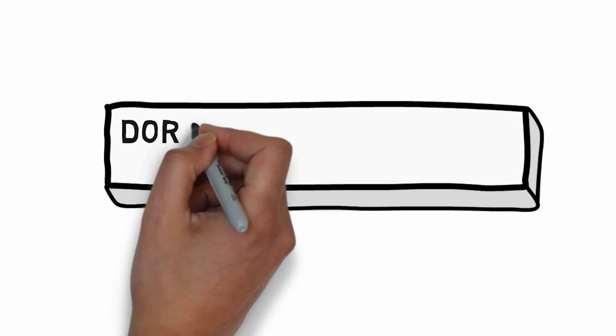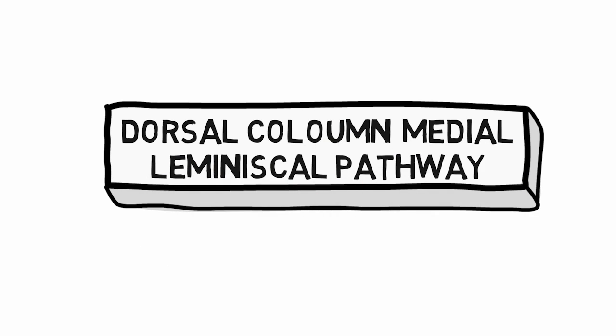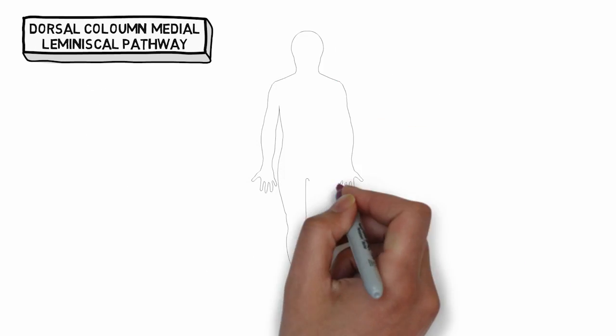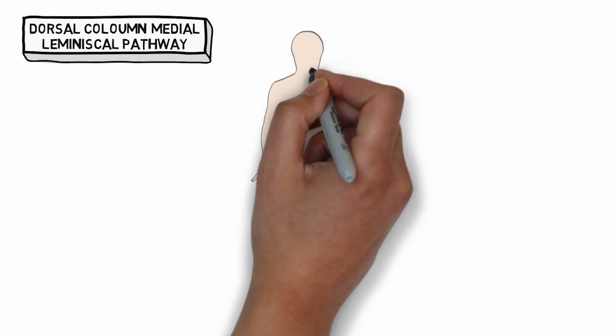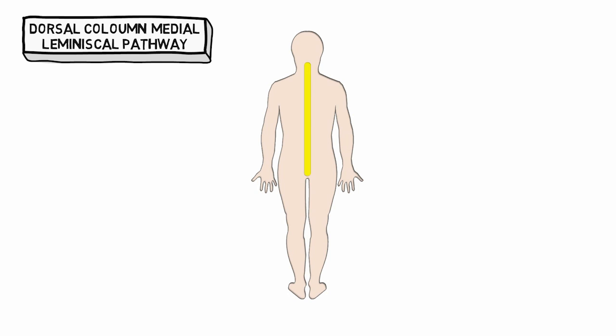In this video we will discuss the dorsal column medial lemniscal pathway. The dorsal column pathway is a tract of nerve fibers which is present in the posterior part of the spinal cord.